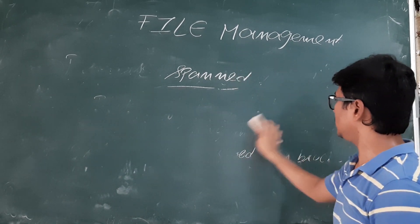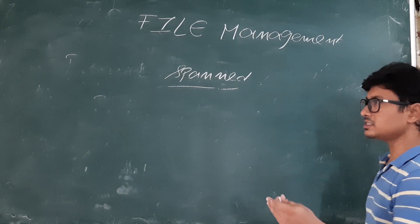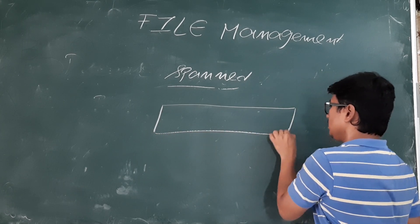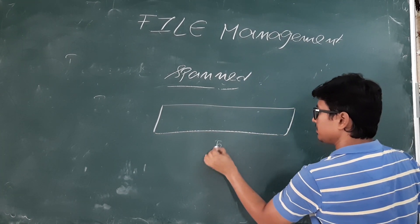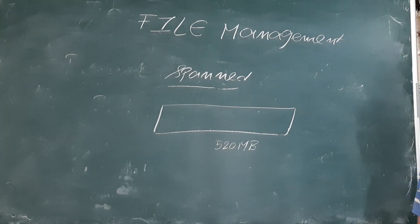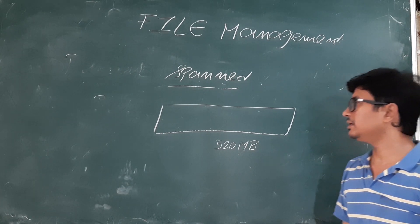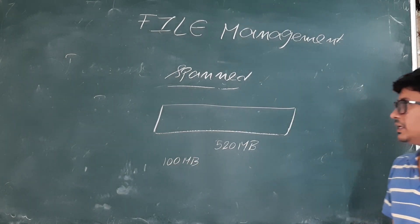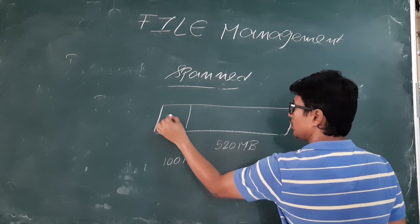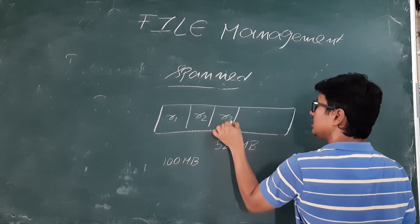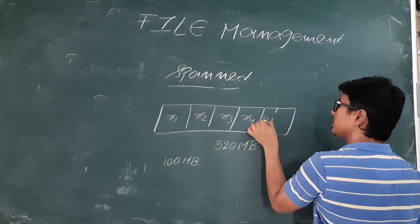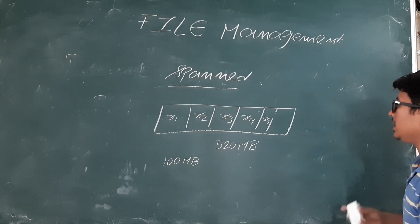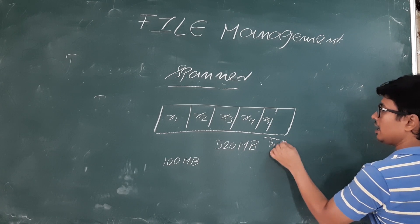Now coming to the spanned strategy for storing records in a block. Let's take for understanding purposes that I have a block of 520 MB capacity — one block size is 520 MB. Each record size is 100 MB. So how many records can I keep? I can keep record 1, record 2, record 3, record 4, record 5 — five records. Five records of 500 MB, so the remaining 20 MB will be left over.